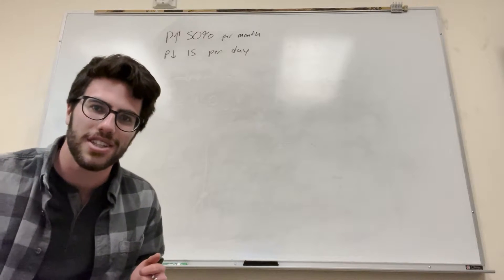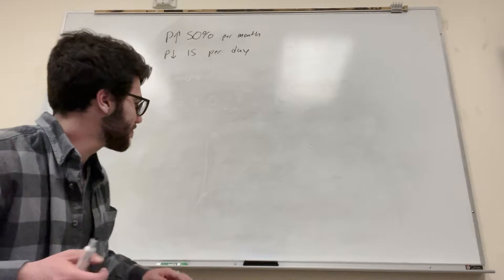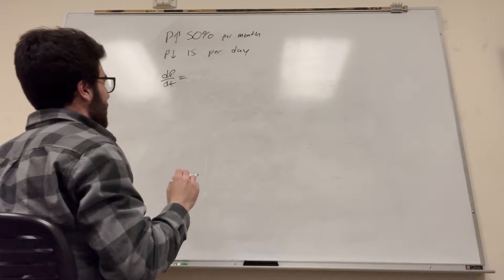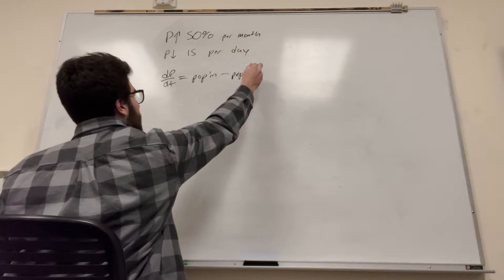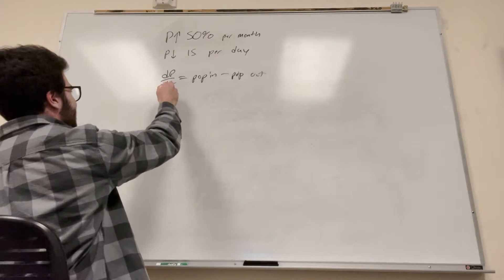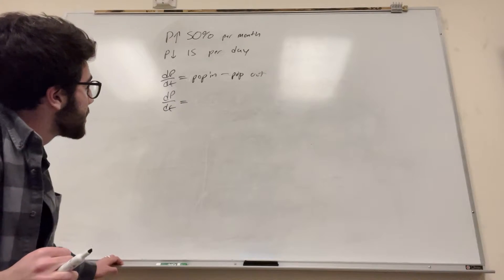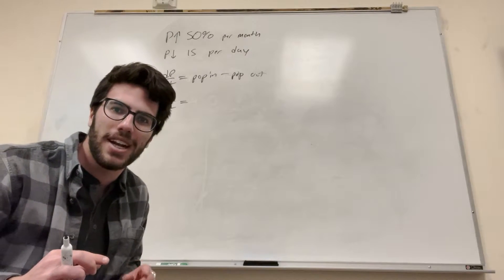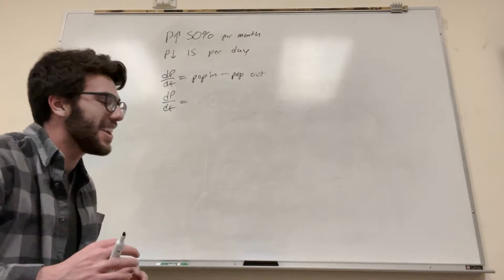The first part wants us to write a differential equation. So the rate of change of the population is going to be population in minus population out. The population in is 50% per month, meaning the way the population changes is dependent upon the population itself — that's a differential equation right there.